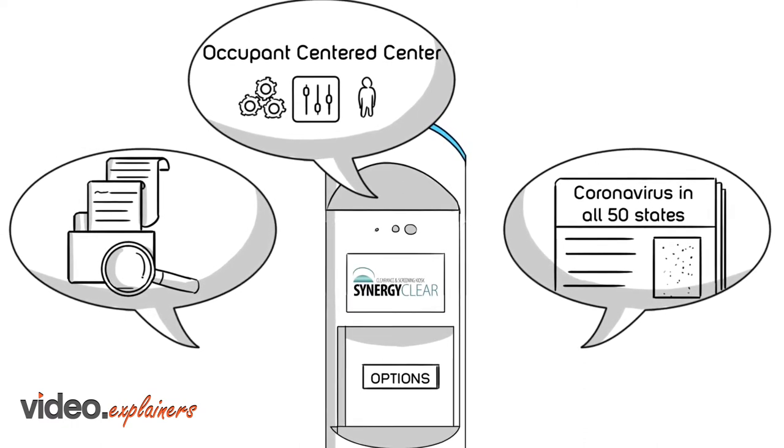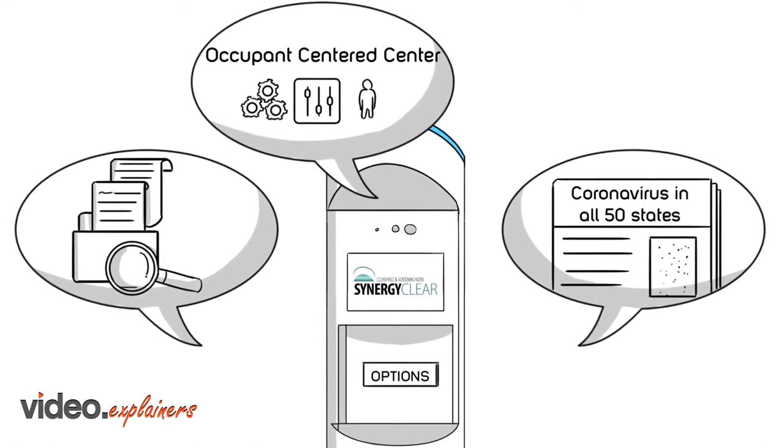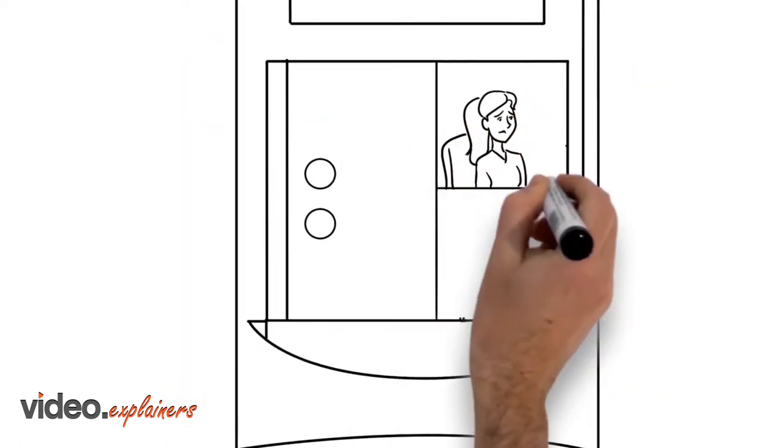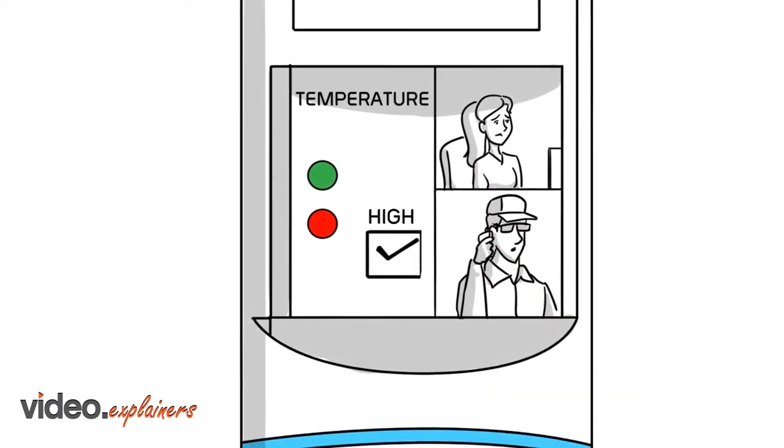Again, temperature test results can open entrance doors or restrict entry. If a red indicator appears, then a two-way video conference call can be initiated with HR or premise security.